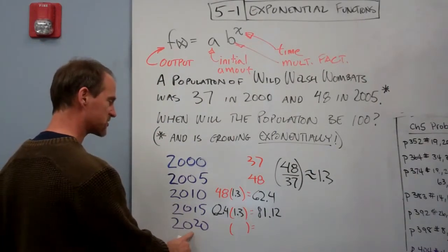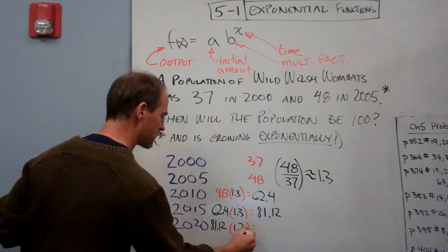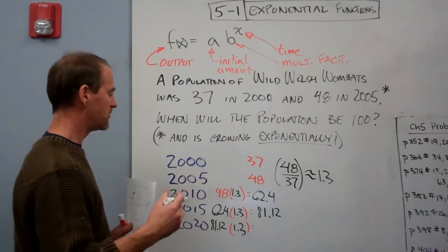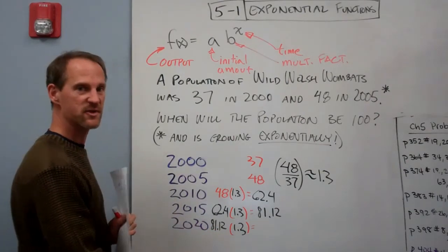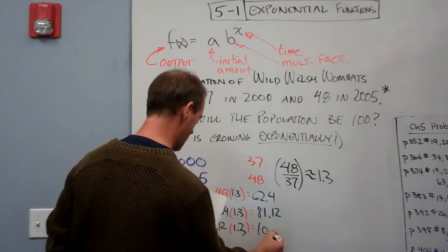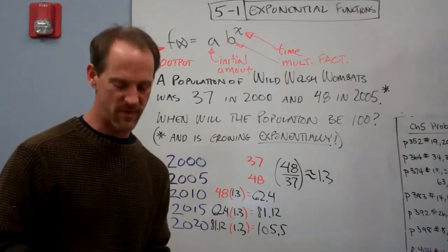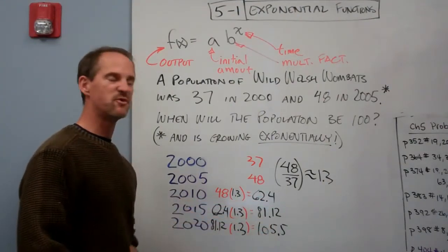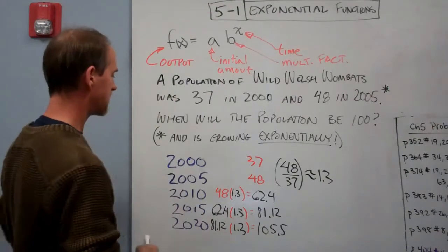And then finally, the population in the year 2020 is going to be that 81.12 times, again, the growth factor, which we'll assume is staying the same—and it will change in some problems, but that's more in advanced math where something like a disease or predation or overpopulation will change that. But right now, we're assuming it's constant, and that gives us a population of about 105.5. Now, obviously, you can't have half of a wombat, but we'll model the population as precisely as we can, so we'll use that decimal, and then in any given year we can round it to a whole wombat if we want.